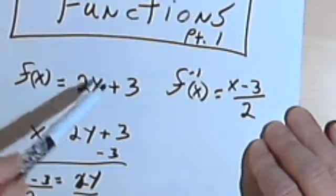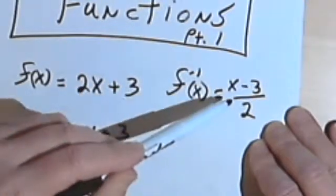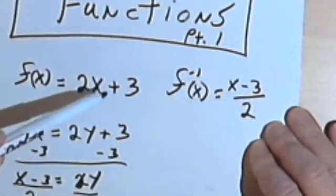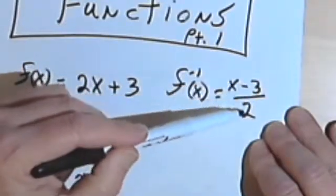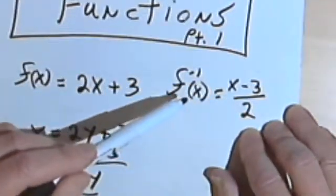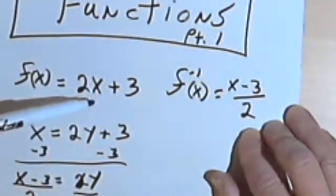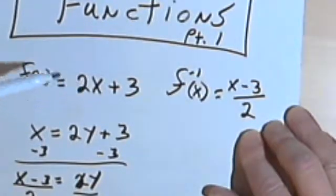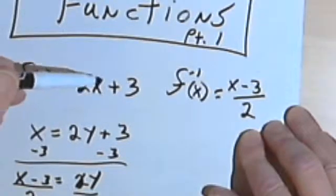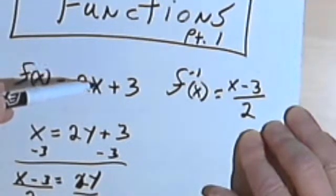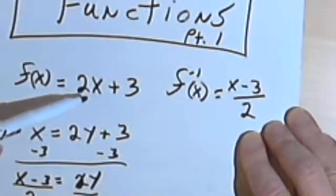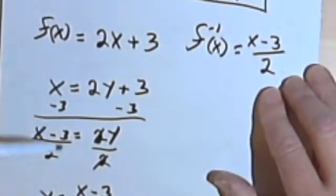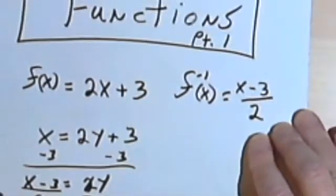We take all those operations and in reverse order we undo them. Since the last thing we did was add 3, we now take an x and subtract 3. And before adding the 3, we had multiplied x by 2 — so now we take x minus 3 and divide it by 2. An inverse, in a sense, undoes everything that was done to the independent variable in the original function. So you can swap the x's and y's, solve for y, and that gives you your inverse.